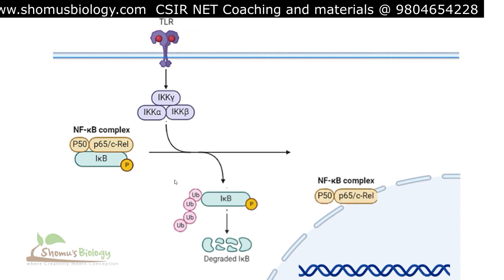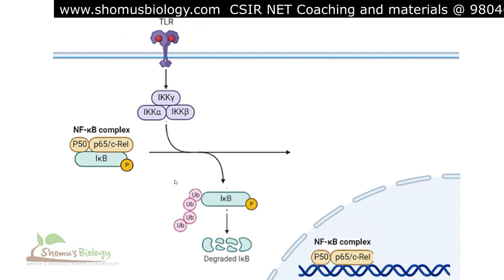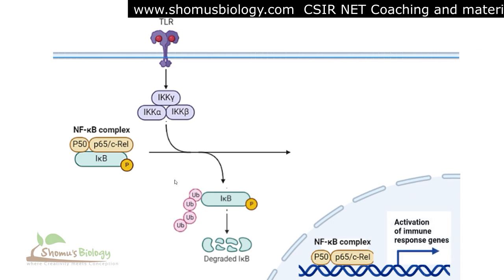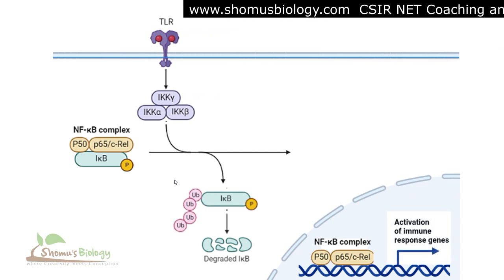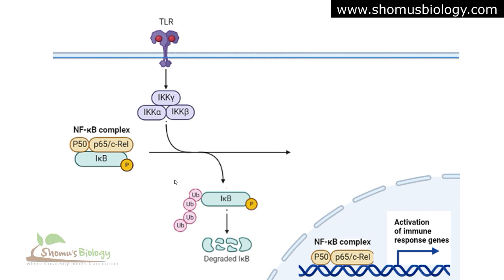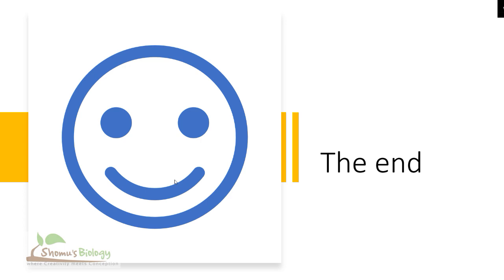The active NF-kappa-B complex can now enter the nucleus and interact with specific regions of the DNA, causing the activation of immune response genes. Once those immune response genes are activated, further cell growth, development, and proliferation can be mediated. This completes the NF-kappa-B signaling pathway, covering what NF-kappa-B is and how its signaling and regulation work.